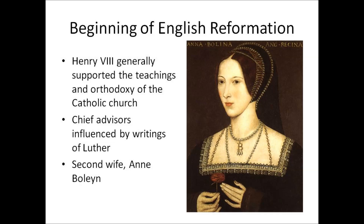Henry is going to break with the church, not out of any theological difference — he actually liked the teachings and orthodoxy of the Catholic Church — but he needs to have a divorce. For him, the stability of his kingdom comes first. So he will divorce Catherine, and he will divorce the church. As I talked about in my last lecture, this is a period where the government is going to rely more and more on bureaucrats. And Henry VIII's bureaucrats, prior to the Reformation, were reading about Luther in secret. Now that Henry had openly broken with the church, these men were openly implementing Luther's ideas in England.